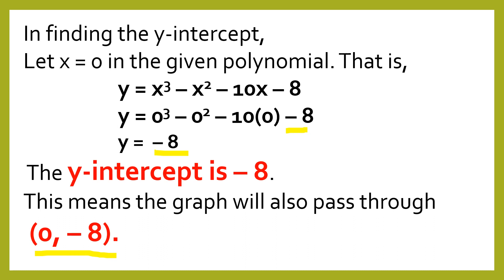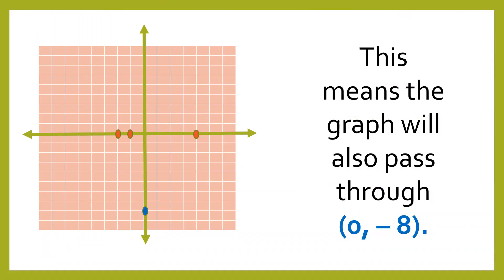So this means the graph will pass through 0, negative 8. This is what our points will look like. You can see here on the x-axis, our x-intercepts: 1, 2, 3. And the y-intercept is on the y-axis.